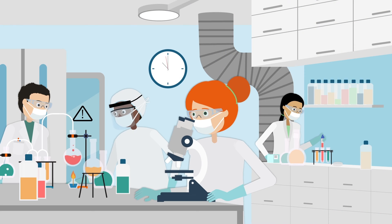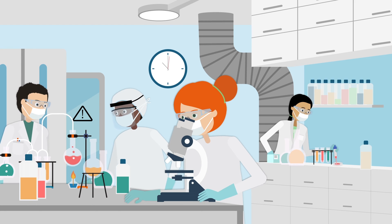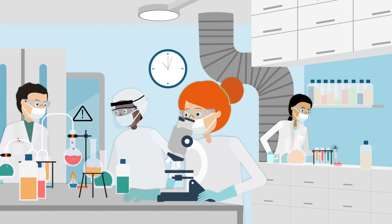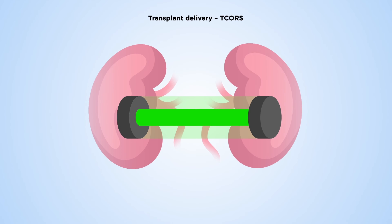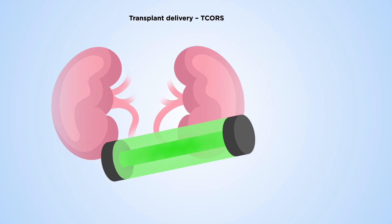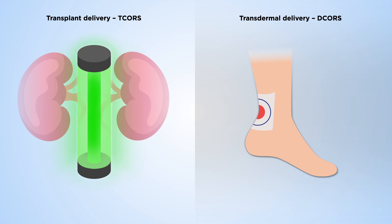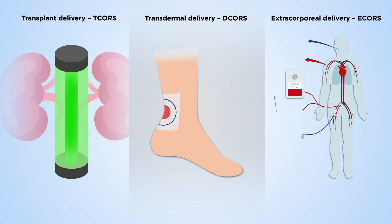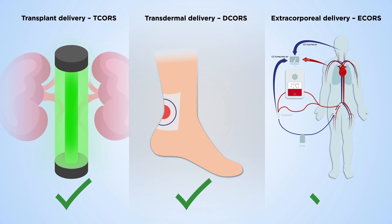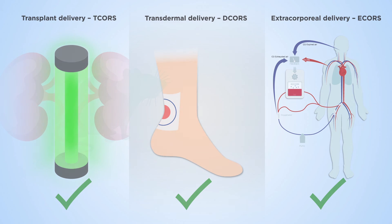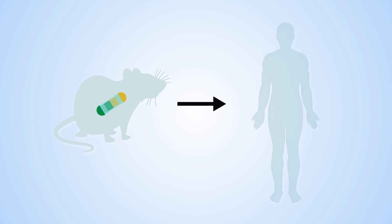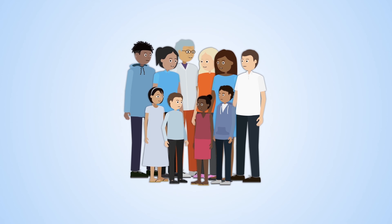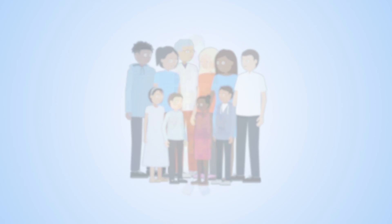The researchers have developed this technology into multiple embodiments for different medical applications. These include use in transplant medicine, where it can improve the availability and quality of transplant organs. It can be applied transdermally for sports injuries such as tendinitis, and for extracorporeal resuscitation after cardiac arrest. All these embodiments have been successfully tested in animal experiments, and the researchers now plan to move this technology into proof-of-concept studies in humans to help address the unmet clinical needs of many disorders.